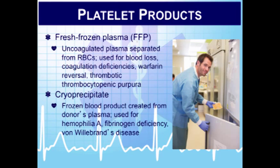Fresh frozen plasma (FFP) must be thawed out, which takes time. It's rich in clotting factors and is used in patients with blood loss, coagulation defects or deficiencies, to reverse warfarin or Coumadin, and in thrombotic thrombocytopenic purpura (TTP). FFP does not contain platelets. It has a preservative that can bind with calcium, causing hypocalcemia. This can lead to prolonged QT intervals, torsades de pointes, or bradycardia. Patients may complain of muscle cramping, wheezing, seizures, or hypotension — monitor ECG closely.